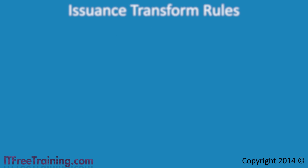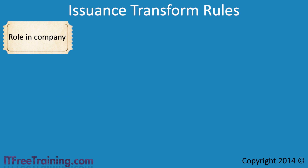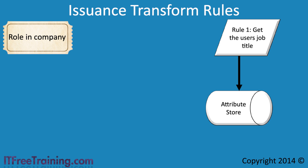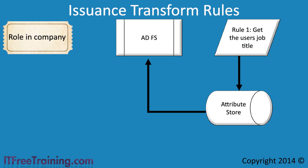Since the issuance transform rule is a little bit more complex, let's look at an example. Consider what happens when a claim is being created. When a request to create a claim is made, the issuance transform rules are run. In this example, the first rule that is run is to get the user's job title. In order to get this information, the attribute store is contacted, which contains the job title that the user performs in the company. ADFS uses this information to create the claim. You can see how the issuance transform rule tells ADFS what information should be put into the claim. However, later on you find out that a user obtained a claim from the federation server but was not able to access the claims-based application. When you investigate the problem, you determine that no job title has been entered for that user.